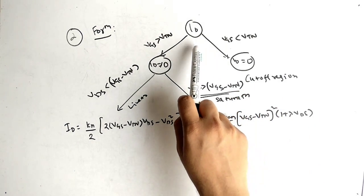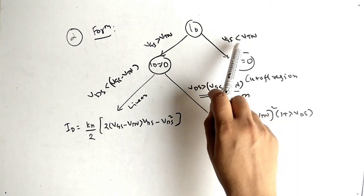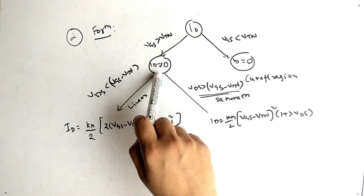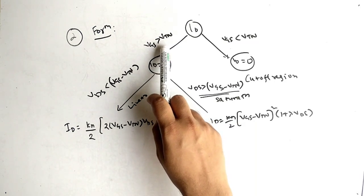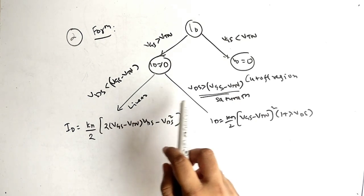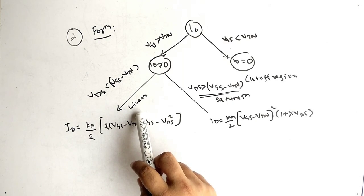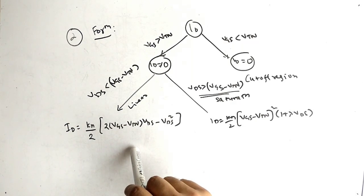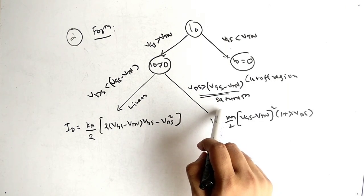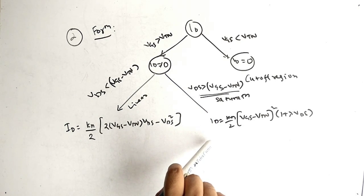Recap: ID equals 0 when VGS is less than VTN (cutoff). When VGS exceeds VTN the circuit is active. If VDS is less than VGS − VTN, use the linear formula. If VDS is greater than VGS − VTN, the device is in saturation and use the saturation formula.